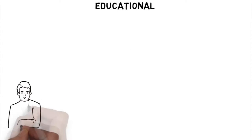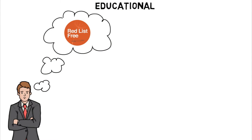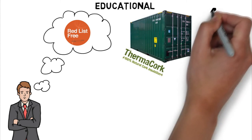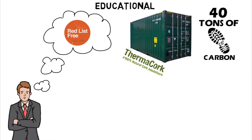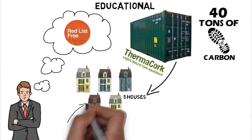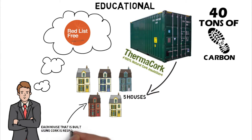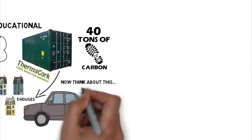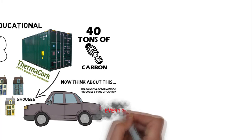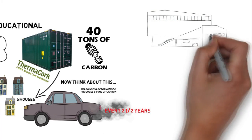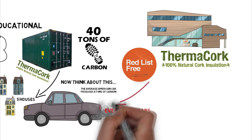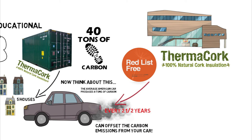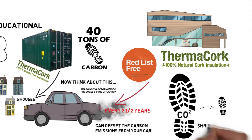I hope this video has been educational and will help you decide on carbon negative products in the future. If each container of natural cork is responsible for sequestering 40 tons of carbon, and each container has enough cork to insulate, let's say, 5 houses, that means each house built using cork is responsible for sequestering 8 tons of carbon — not including the future energy savings due to its insulation. The average American car produces roughly 8 tons of carbon every two and a half years. Just by building a house using a carbon negative product like cork can offset the carbon emissions from your car. That will definitely shrink your carbon footprint.